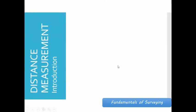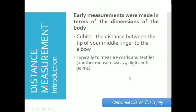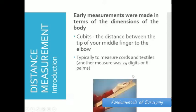Before surveying instruments were developed to measure distance, there were early measurement techniques that were practiced where we use our body to measure distances. First one is cubits, the distance between the tip of your middle finger to the elbow, typically to measure cords and textiles.